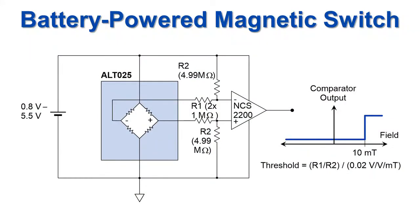These sensors are easy to interface to op amps and comparators. For example, here's an adjustable threshold magnetic switch that works down to 0.8 volts.